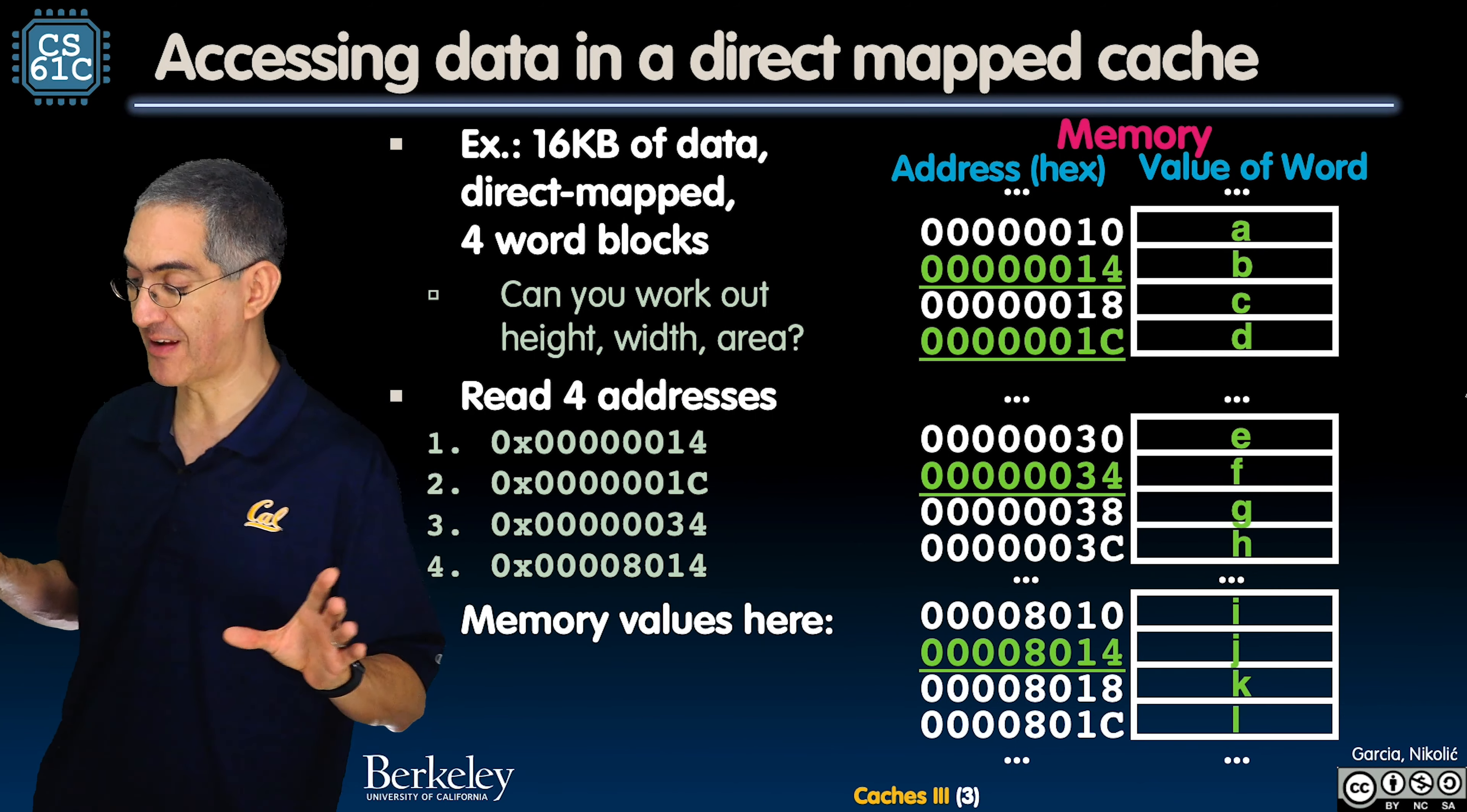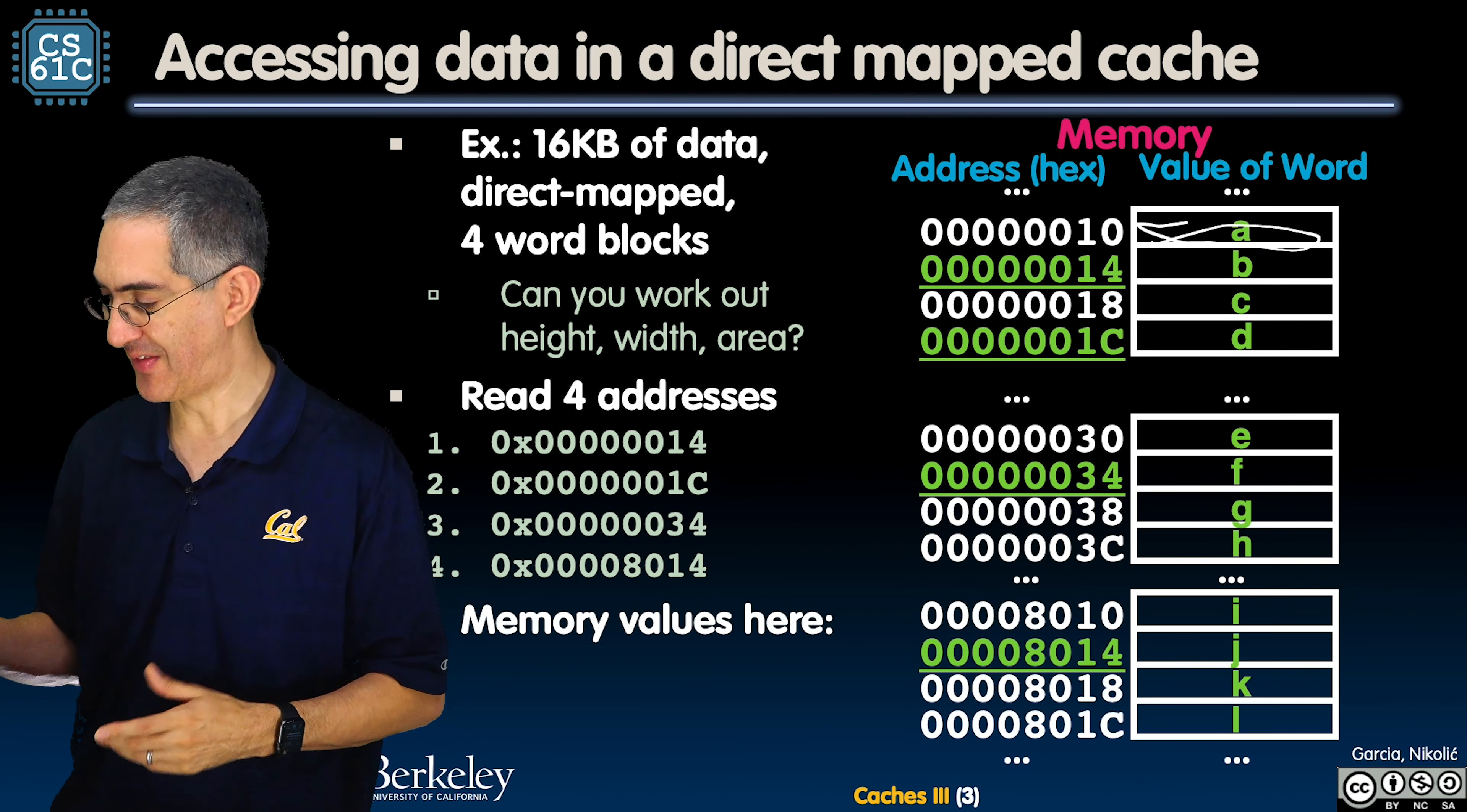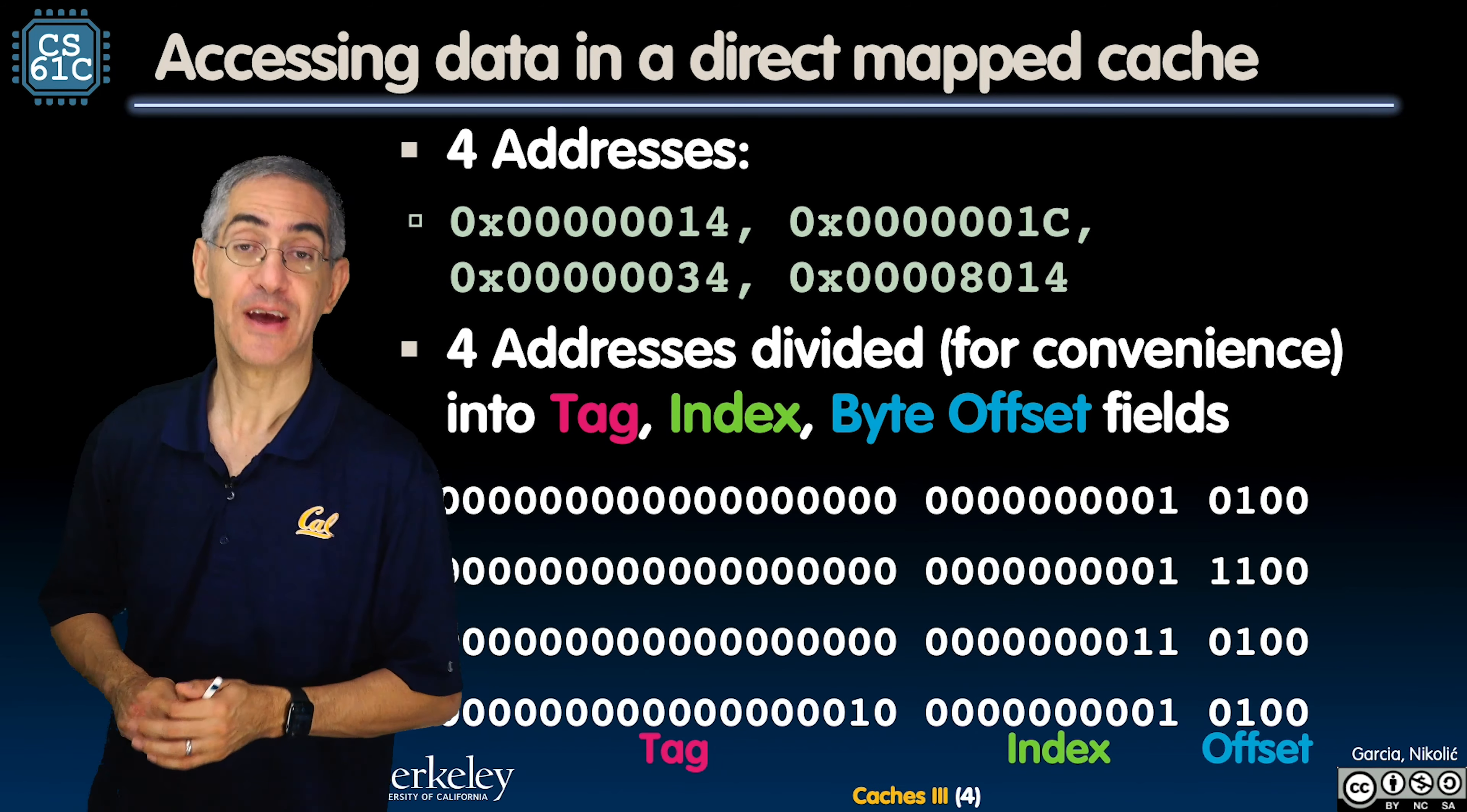I'm going to read four addresses: 14 in hex, 14, 1C, 34, and 8014. What happens? That's what I'm going to do. And now you'll see how to do every single thing. We'll break it all up. We'll do this for you. And here's the memory values. We're going to put some values, whatever a is. These are word wide. These are words here we're talking about. A through D is the lower side, and then in the thirties it's E through H. And then the 8000E range, it's going to be I, J, K, and L.